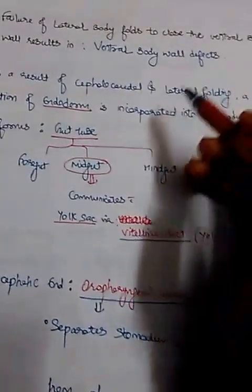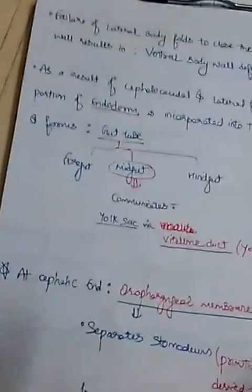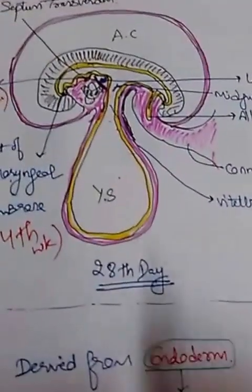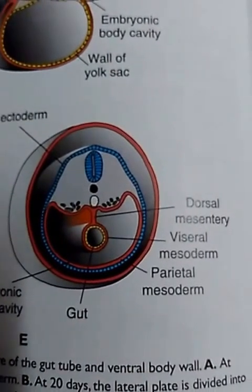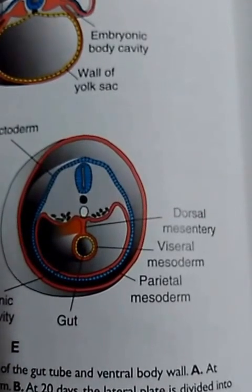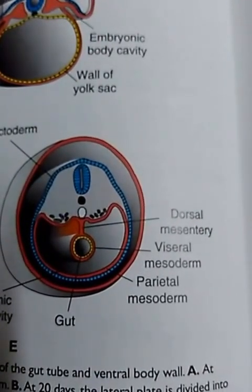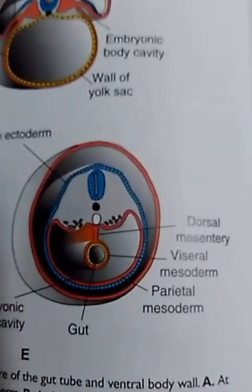You should remember that if the body wall folds don't close, they can lead to ventral body wall defects, as seen in previous pictures. In the transverse section, if the ventral body wall does not close properly, the gut tube lined by visceral mesoderm or splanchnic mesoderm will be exposed, and parts of the foregut can herniate, causing ventral body wall defects.